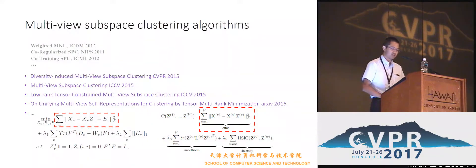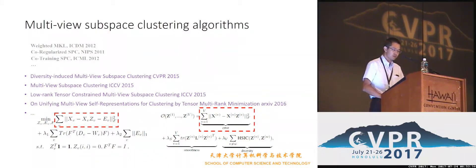Though these multi-view methods can achieve much better performance than single-view methods, we find that they often construct the self-representation matrix on each single view. Since each single view is usually difficult to describe the underlying structure of data, we propose to use a latent multi-view representation for subspace clustering.